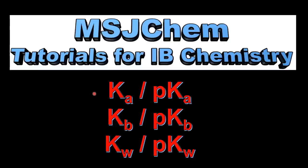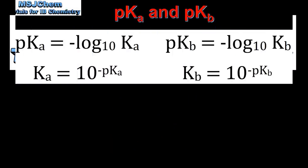This is MSJChem. In this video I'll be looking at Ka and pKa, Kb and pKb, and Kw and pKw. Let's start by looking at pKa and pKb.